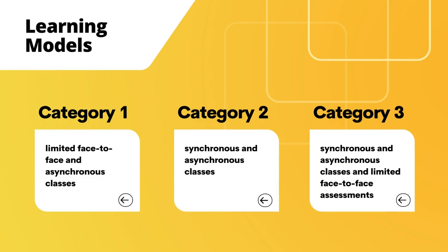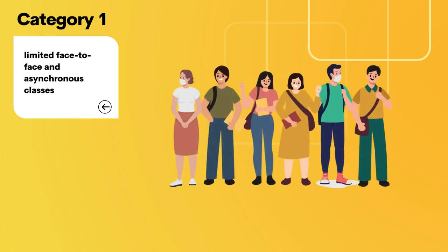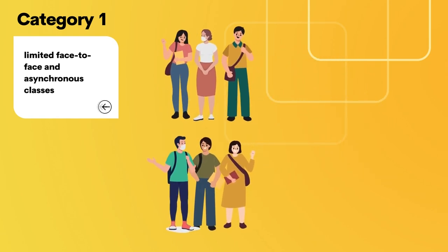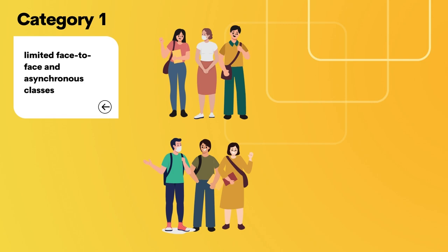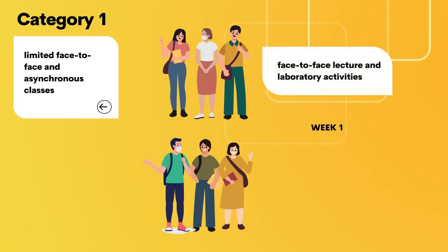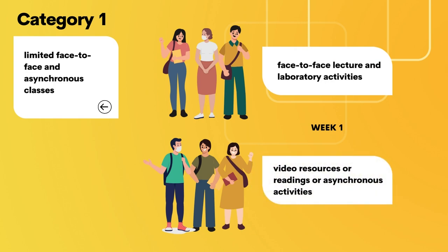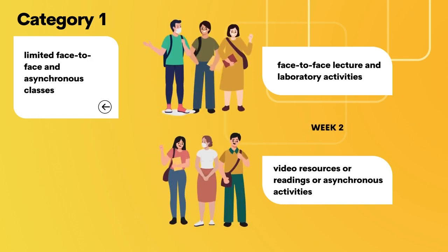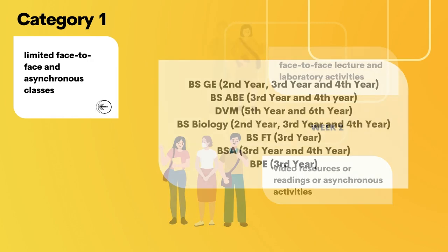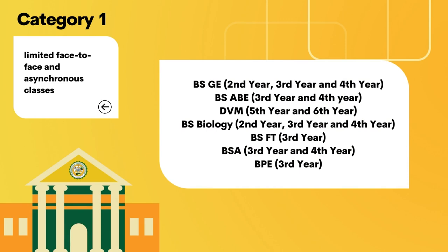Category 1 is a combination of face-to-face and asynchronous classes. In this learning model, students are divided into two groups who attend the face-to-face sessions alternately. For example, Group 1 takes up face-to-face lecture and laboratory experiments while the other group is given video resources, readings, and asynchronous activities. The groups will switch the following week. Programs under this category are the following.